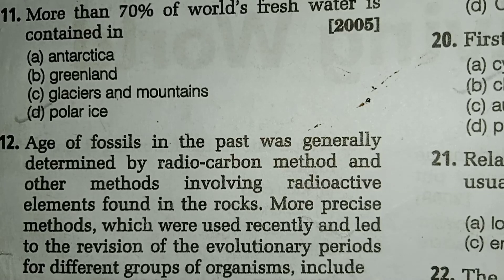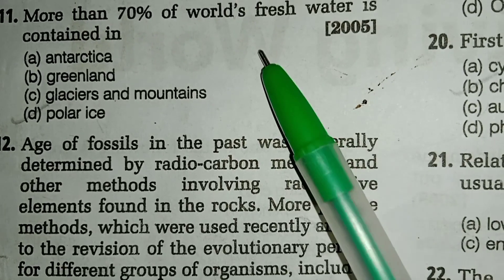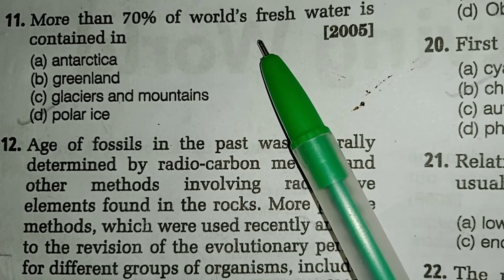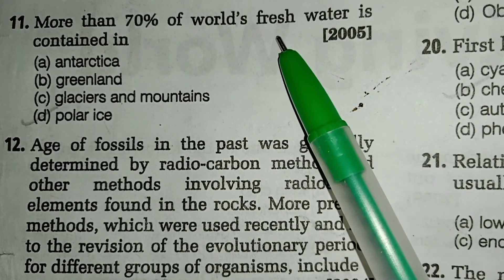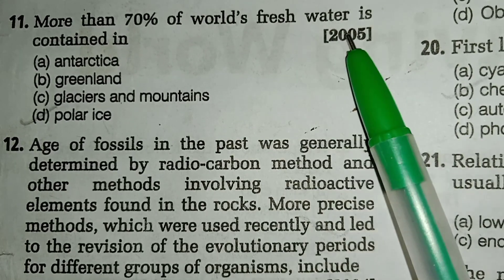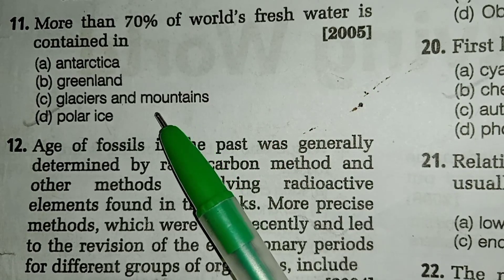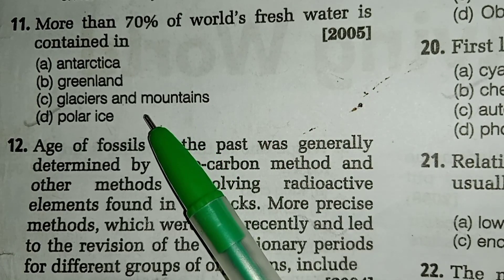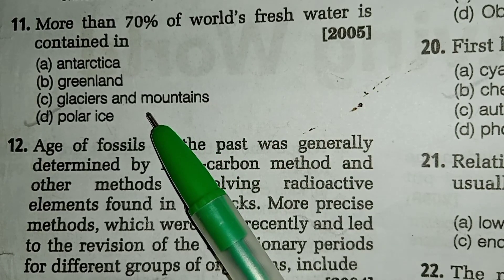Hello everyone, welcome to the Biology 5 MCQ series. Let's start with question number 11: more than 70% of the world's fresh water is contained in — the answer is option D, polar ice.